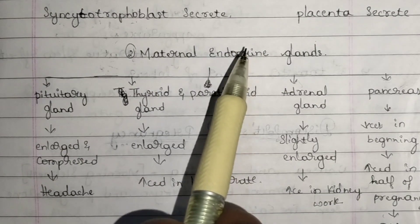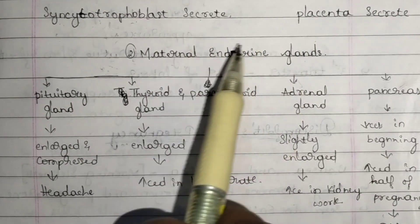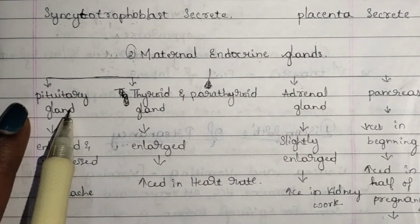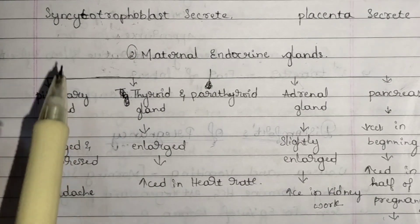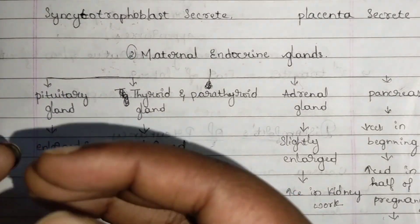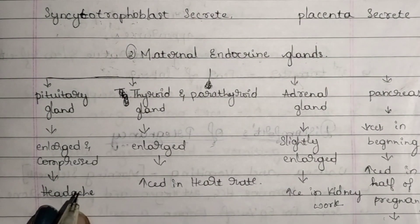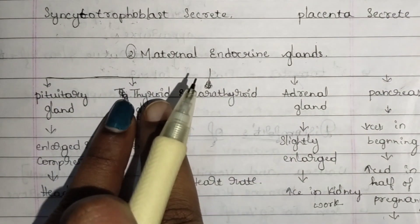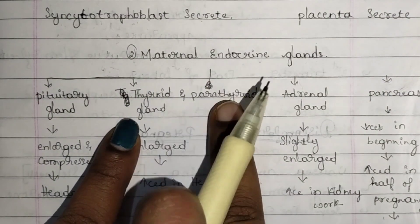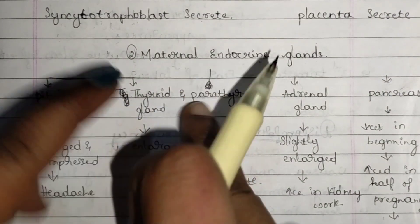Next we have maternal endocrine glands. First, the pituitary gland. Since the baby is growing inside the womb, the pituitary gland is active. First, the pituitary gland gets enlarged and then it gets compressed. Because of these enlarged and compressed activities, the mother gets headaches.